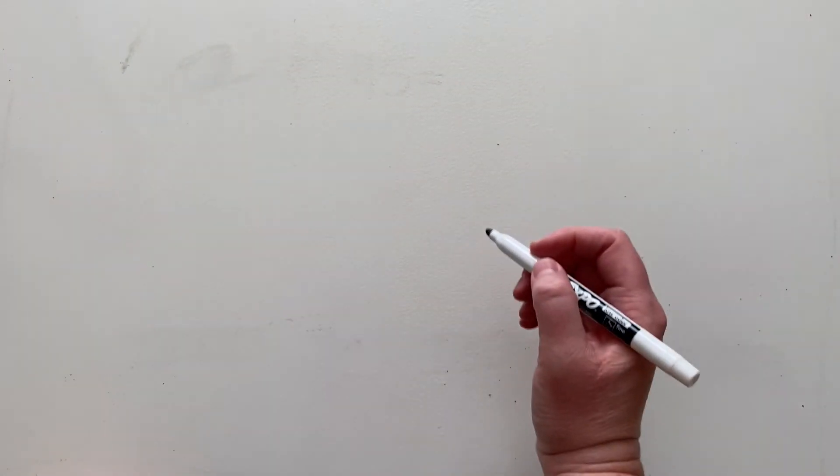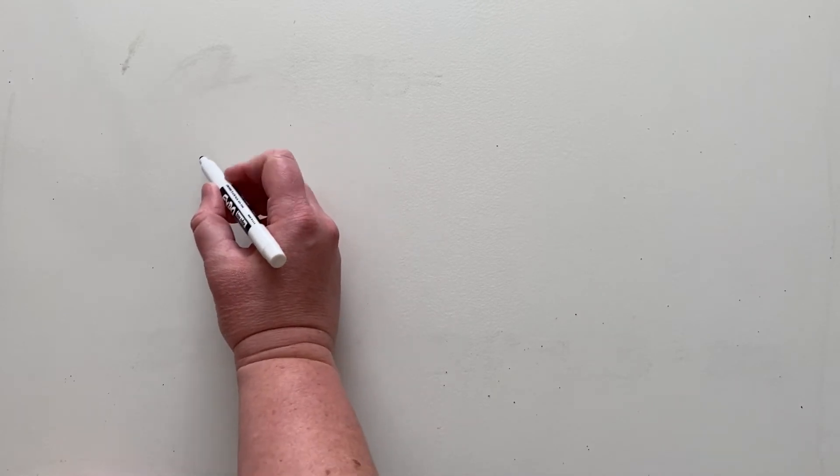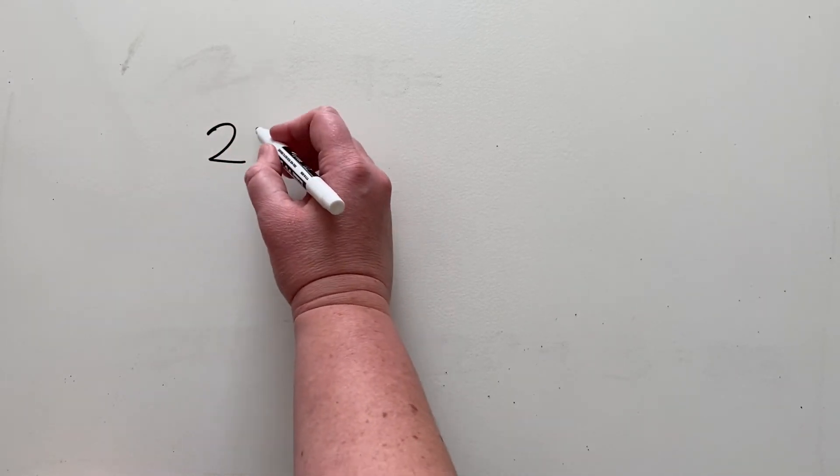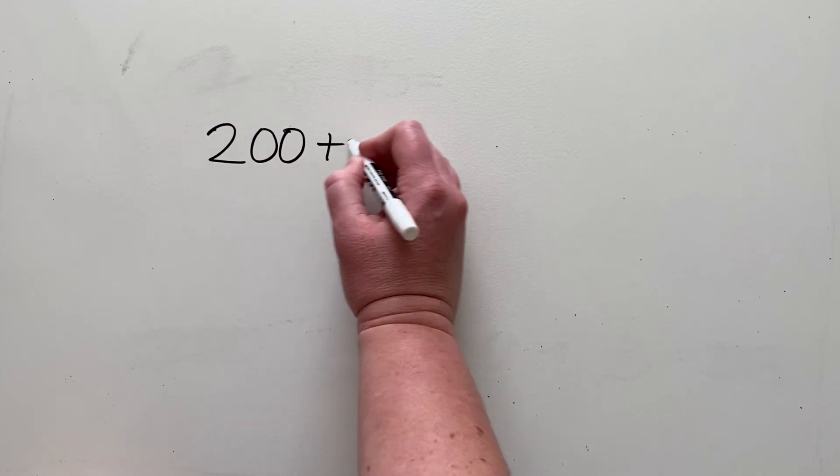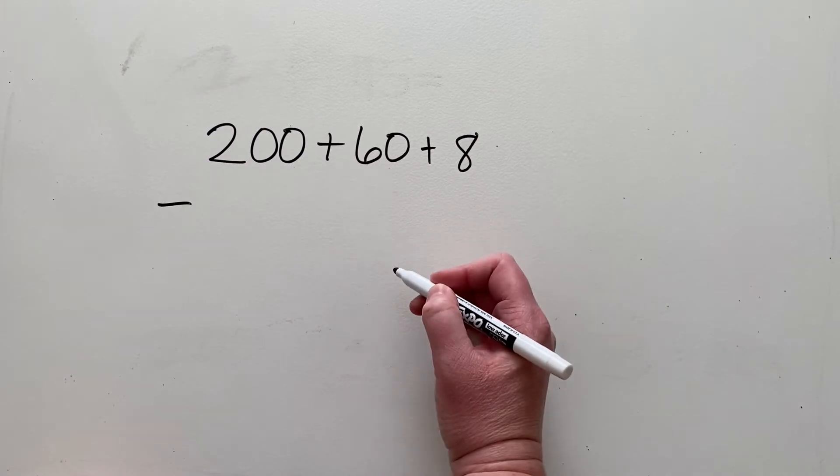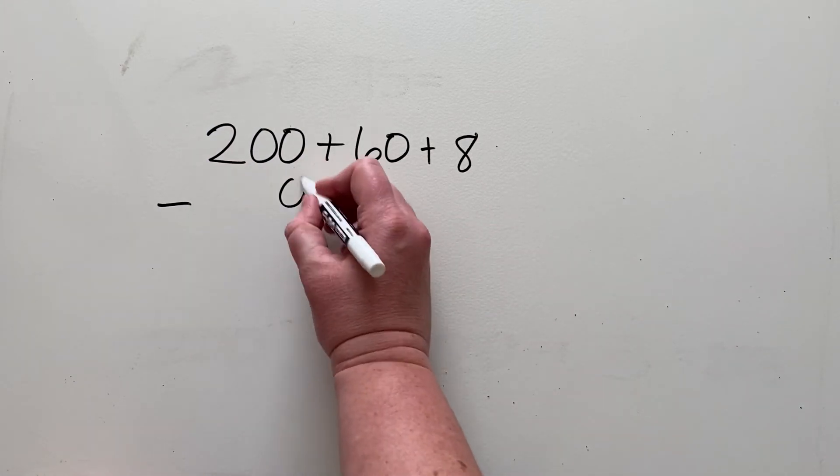Now we're going to show that same problem, 268 minus 45, but with expanded form. This helps me see the place value. So 268, I have 200 plus 60 plus 8, and I'm going to be subtracting, and then there's nothing in the hundreds place, 40 and 5.